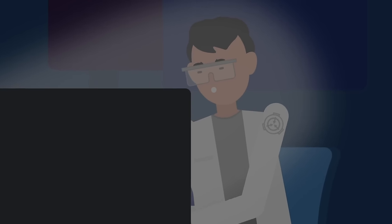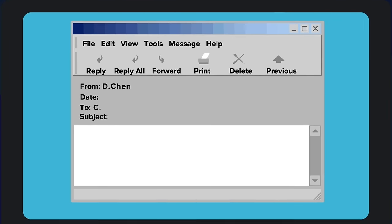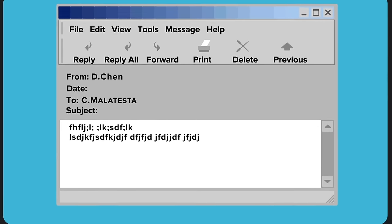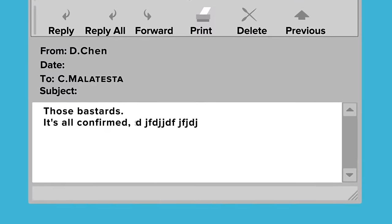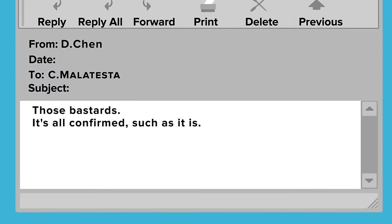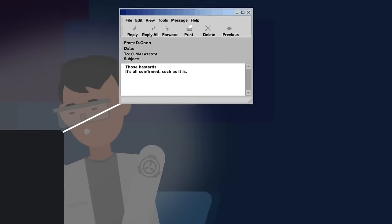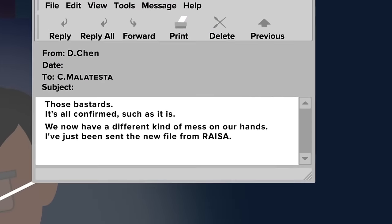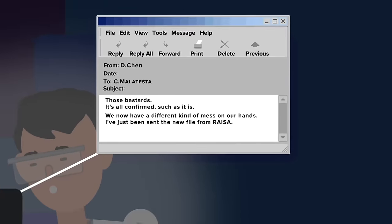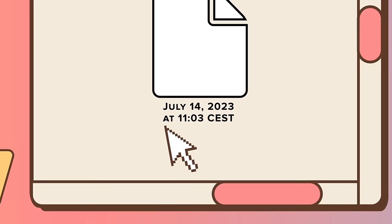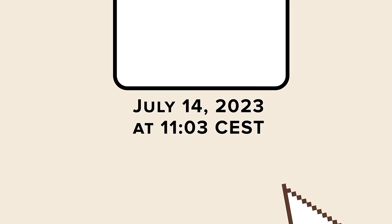On the night of the 14th, head researcher Dee Chen of the Parazoology Department emailed a file update on SCP-7273 to Site Director C. Malatesta. With this update, a note was included: 'Those bastards. It's all confirmed such as it is. We now have a different kind of mess on our hands. I've just been sent the new file from Reysa. Remind me never to fuck with the House of Mouse.'